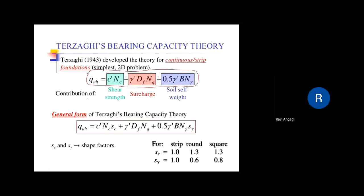While designing the shallow foundation, the SBC of the soil should be given. If SBC is not given but parameters like cohesion c, gamma, or the friction angle phi are given, then you need to calculate the SBC using Terzaghi's formula, and then utilize that SBC for the design of the foundation.